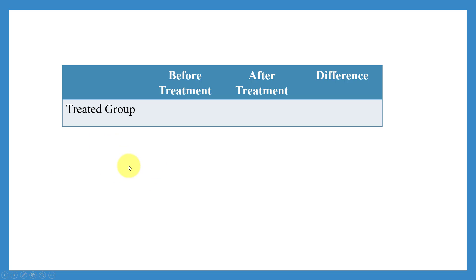So this is the technique we want to study — how it works and why it is called difference-in-difference. Assume we have a treated group: the group that has received the treatment. If it is a medicine, the treated group would be the patients who received that medicine. If it is a vaccine, it would be the people who received that vaccine. If it is a policy, the treated group would be the entities affected by that policy.